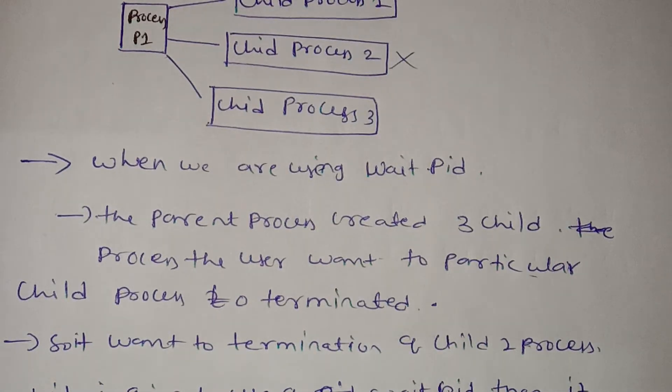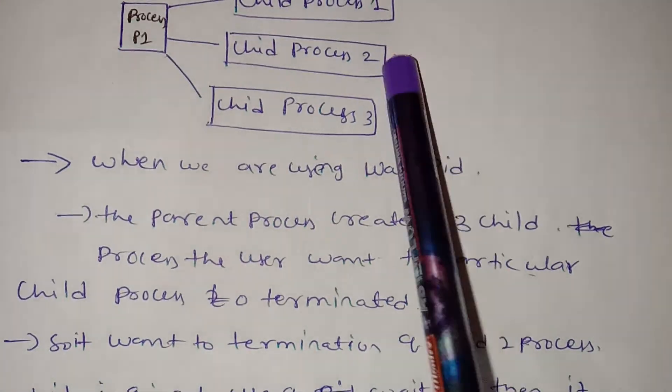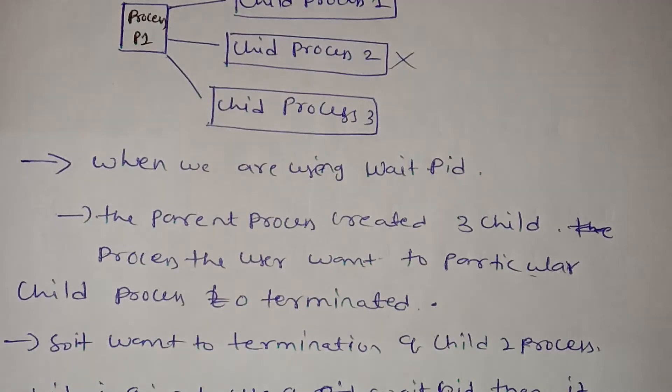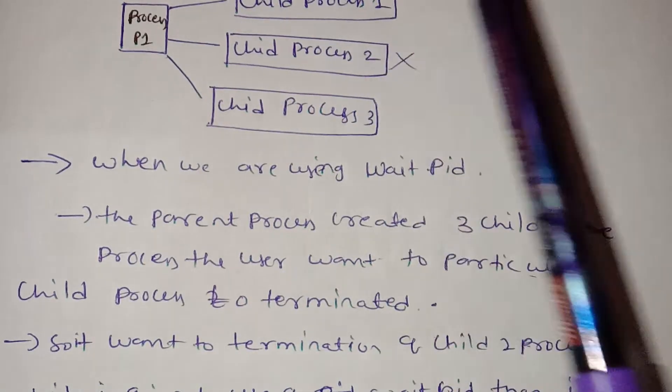Using waitPID, you can wait for a specific child process, such as child process 2.